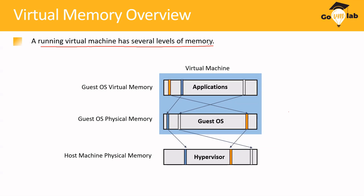Looking at this diagram: you have a guest operating system inside a virtual machine, and this is your ESXi host. You have one ESXi host where you deploy one virtual machine, but you could deploy multiple virtual machines. When you create a virtual machine, you assign memory to it during creation, and that memory is called the guest operating system physical memory. For example, if you created a VM with 2 GB of memory, that 2 GB becomes the physical memory for the guest OS.